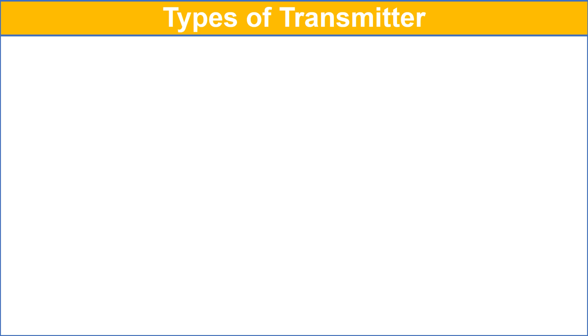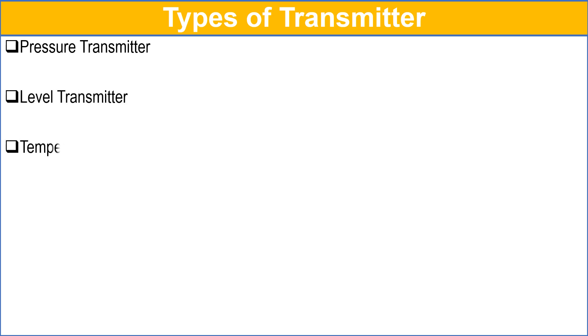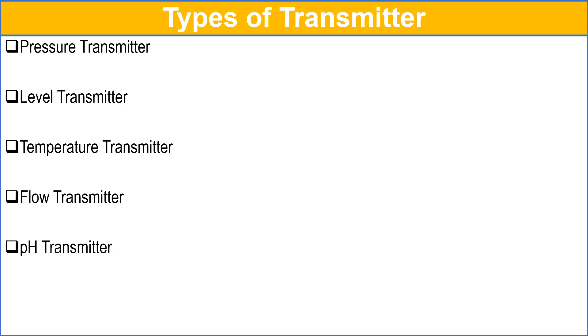There are different types of transmitters: pressure transmitter, level transmitter, temperature transmitter, flow transmitter, pH transmitter, and conductivity transmitter.